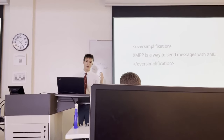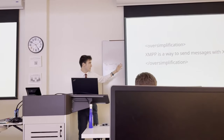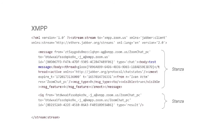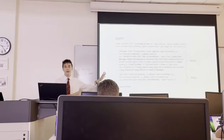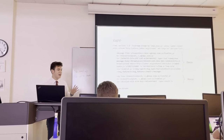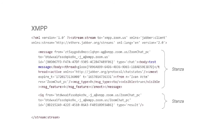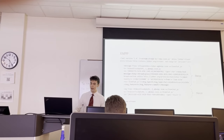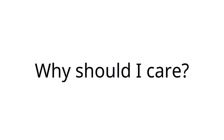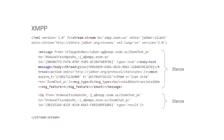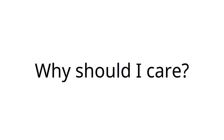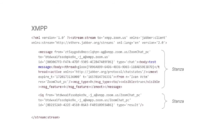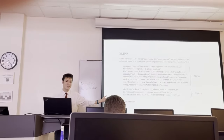XMPP is a standard developed a long time ago in the 90s to write messages with XML. This is what an XMPP message looks like. I'm not going to break this down because it's not super important for this presentation. At its core, you understand it's a protocol for sending messages with XML. Not extremely new, nothing groundbreaking and revolutionary. So why should I care? If it's just a way of sending messages for developers, why should a developer care about something like this? It's a standard a bunch of people set up in the 90s to send messages.